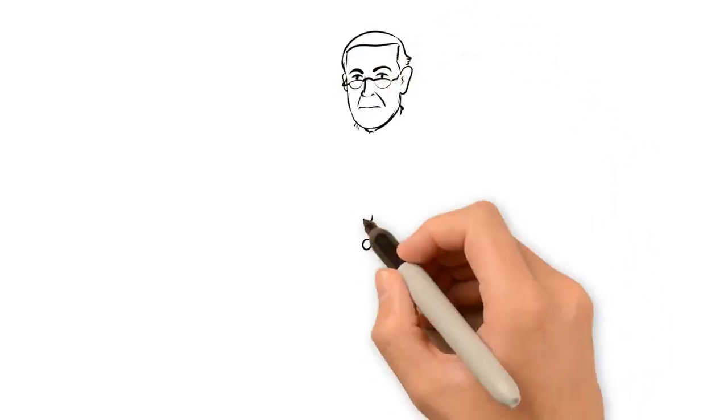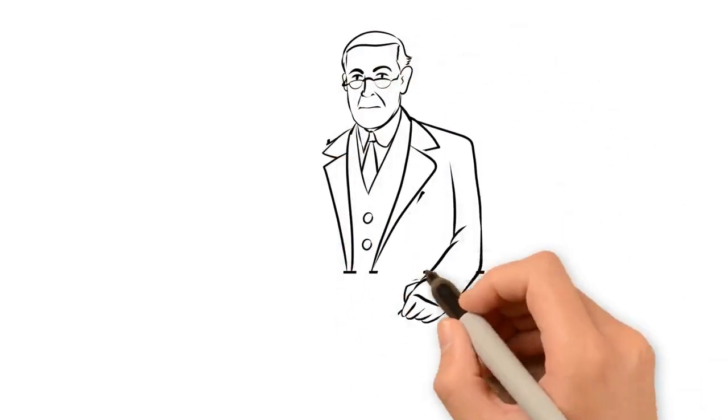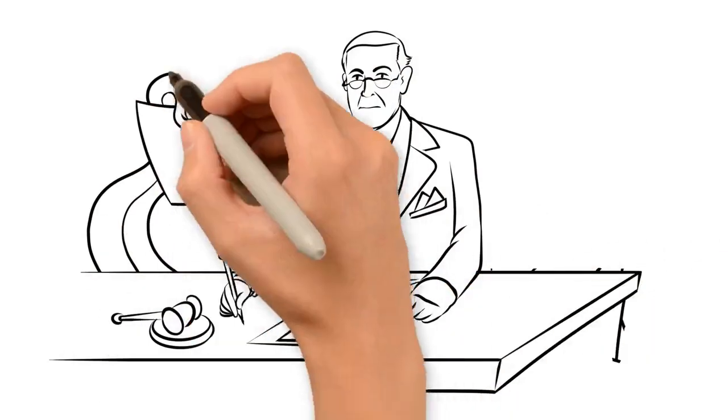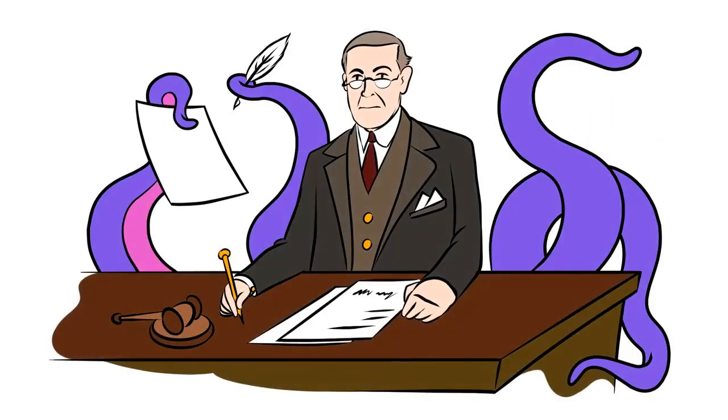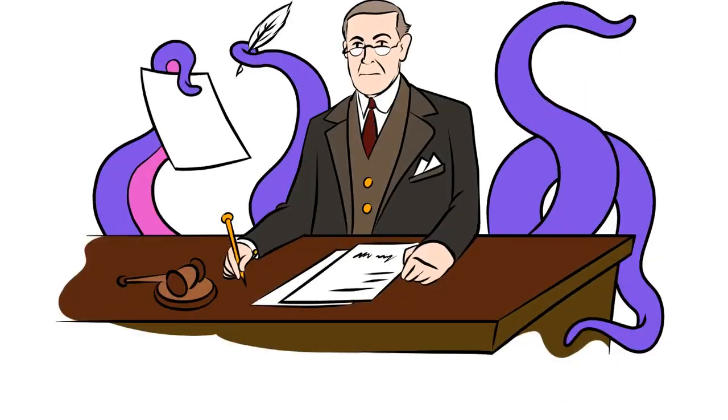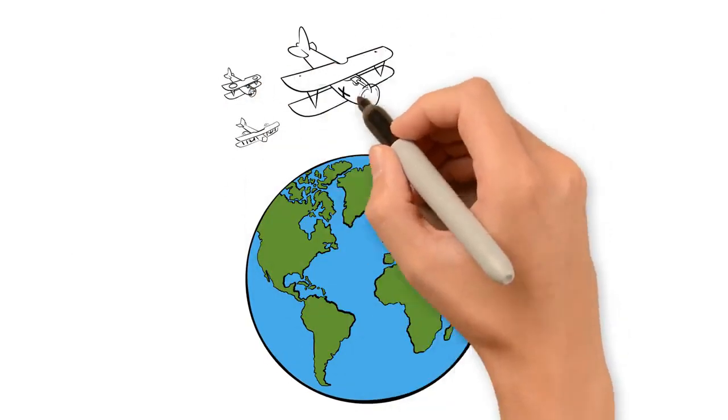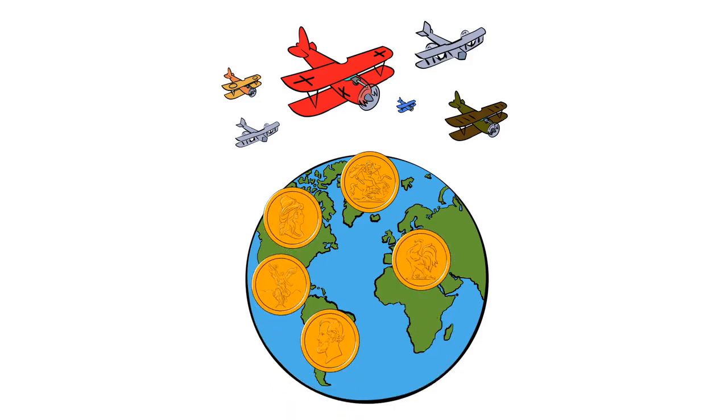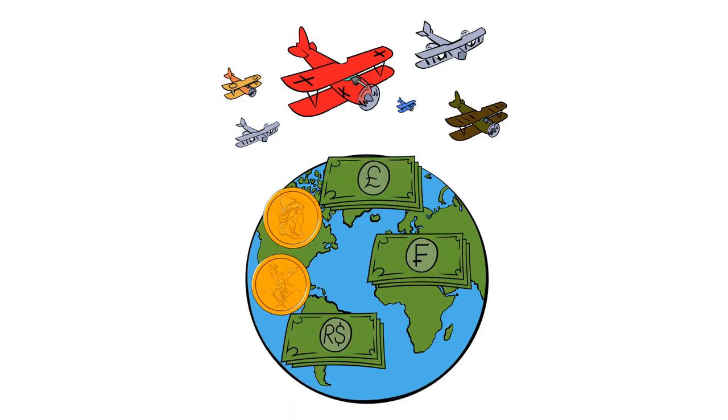In 1912, Woodrow Wilson was elected president in a three-way race with less than 42% of the vote. A year later, he would sign into law the creation of the Federal Reserve. Shortly after, the costs of World War I would force governments around the world to begin massively inflating their currencies, which would result in the end of the gold standard.